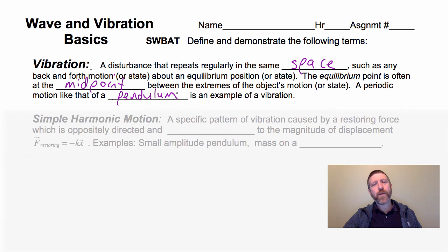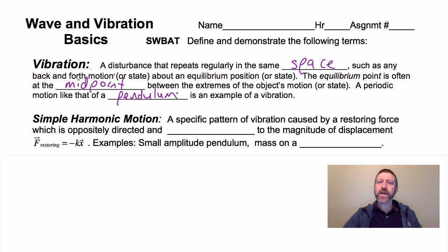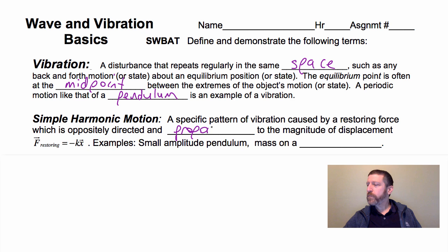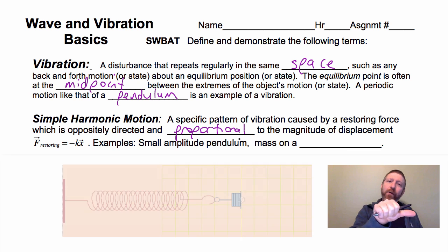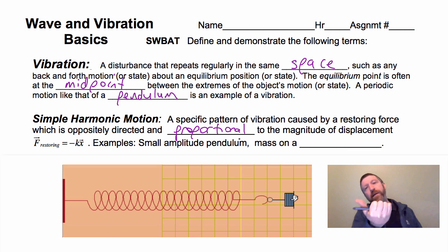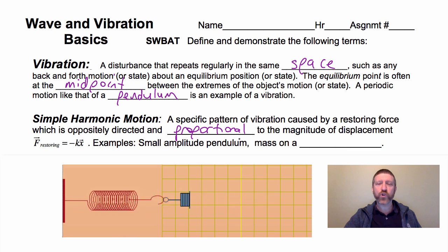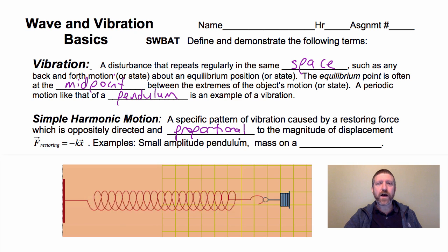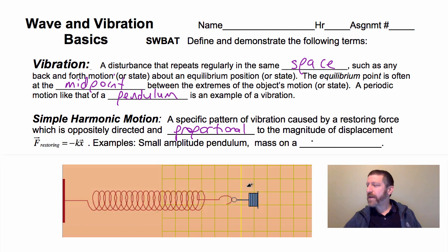Next, we talk about simple harmonic motion. That's a specific pattern of vibration caused by a restoring force, which is oppositely directed and proportional to the magnitude of the displacement. In other words, if you have a spring moving back and forth and you pull the spring that way, it wants to pull you back the other way — oppositely directed yet proportional, meaning you double the displacement, you double the restoring force. Examples are a small amplitude pendulum and a mass on a spring.